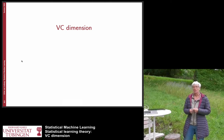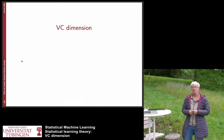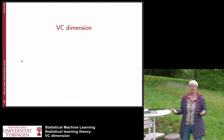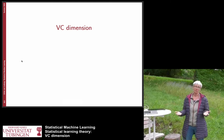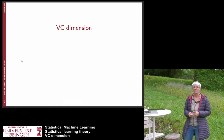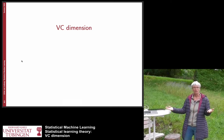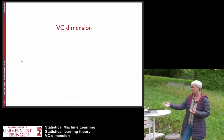Now we are going to look at a different tool which is called the VC dimension, for Vapnik-Chervonenkis. These were the two people who invented it, and it is another combinatorial tool.